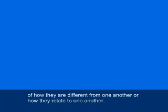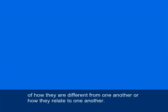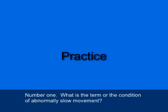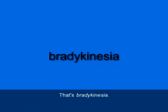We've gone through quite a few terms. Hopefully I've clarified them and you have some idea of how they differ from or relate to one another. Now let's do some practice. Number 1: What is the term for the condition of abnormally slow movement? That's bradykinesia, B-R-A-D-Y-K-I-N-E-S-I-A.